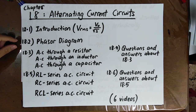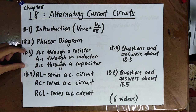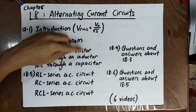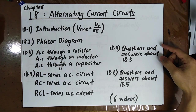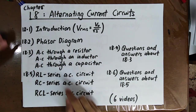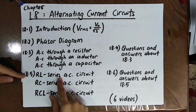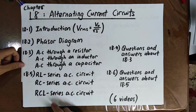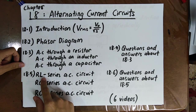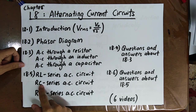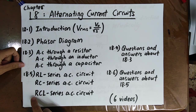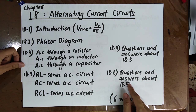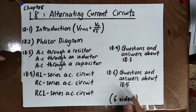In the second video, we will learn how to read phasor diagrams. In the third video, we talk about alternating current through a resistor, an inductor, and a capacitor respectively. The fourth video covers Q&A for that section. In the fifth video, we cover the RL series AC circuit — R means resistor, L means inductor, C means capacitor — including resistor-inductor, resistor-capacitor, and all three in series. The sixth video covers Q&A for that part. Now let's begin the introduction.